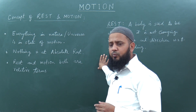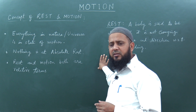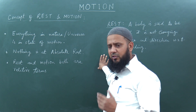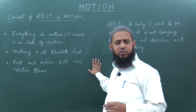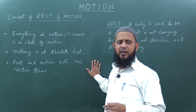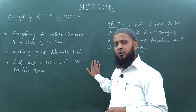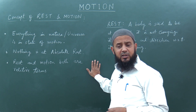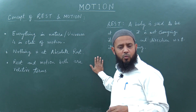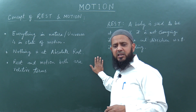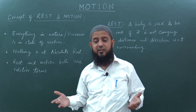Why are you saying that this board is at rest? Because this board is neither changing distance nor direction with respect to you. So you are observing and saying this board is at rest. At the same time, if a person is sitting on the moon, seeing your board and you, what will he observe? He will observe that this board, you, and this entire classroom are in motion.